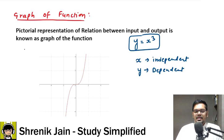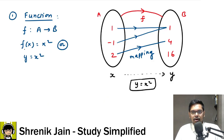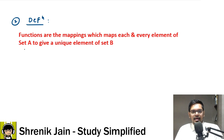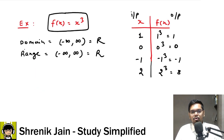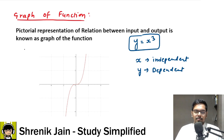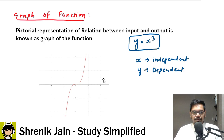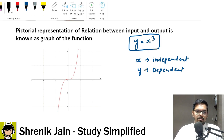Now, the graph of a function is a pictorial representation of the relation between input and output. Here I've plotted y = x³, where the x-axis is the input side and y-axis is the output side. The graph shows how output varies with input — output equals input cubed. Remember: x is the independent variable; you can take any value from −∞ to +∞.